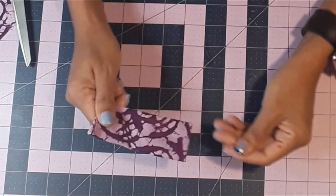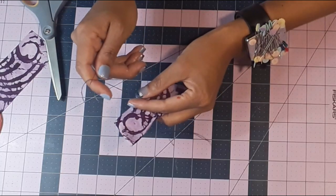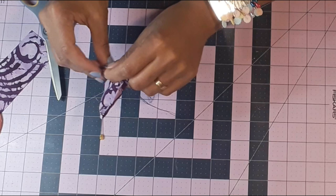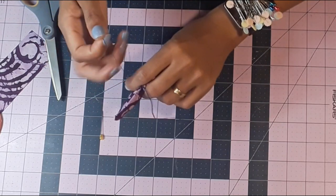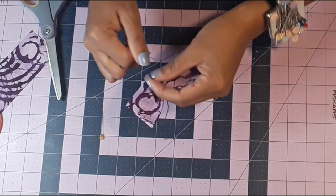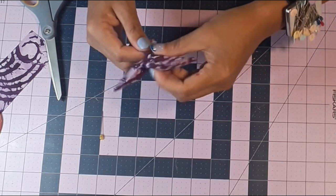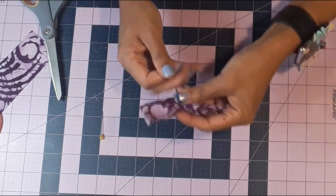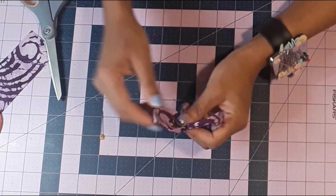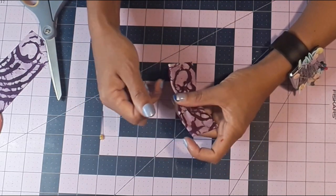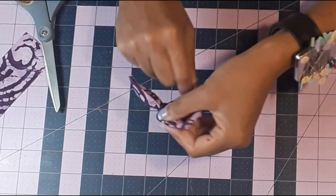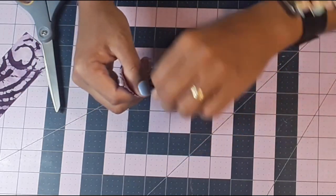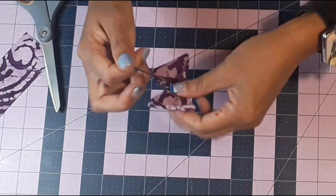It's a good time to give it a good press. I added a gathering stitch in the middle of my bow and now I'm pulling my gathering stitch together to create these gathers. I'm taking the same thread and tying it around the bow to secure it.